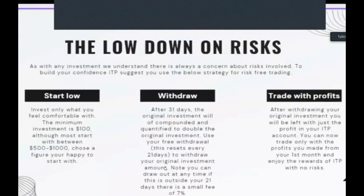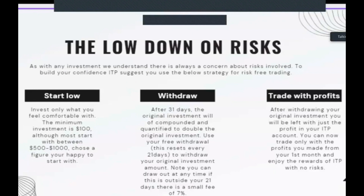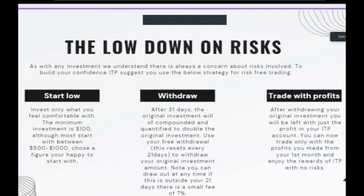The lowdown on the risks: just like with any investment, every single investment carries a level of risk. Always invest with your head, not your heart. ITP suggests a risk-free trading strategy: start low or start with what you are prepared to lose or comfortable with. The minimum investment on G1 is just $100, however my recommended start is at least $500 to $1,000.